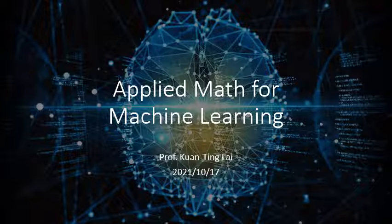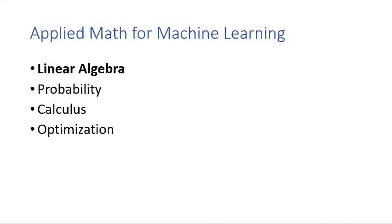I will review several important math fields for machine learning. The first is linear algebra. Linear algebra is very important for machine learning because we convert data into vectors, matrices, or even tensors, so we use linear algebra all the time. At minimum, you need to know matrix multiplication.